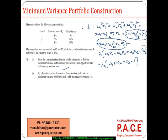Now, if I have to minimize this, I have to take partial derivatives of this Lagrangian function with respect to all 5 variables: W1, W2, and so on. But before that, we can simplify our calculation by substituting all the constants so that our work gets simplified.